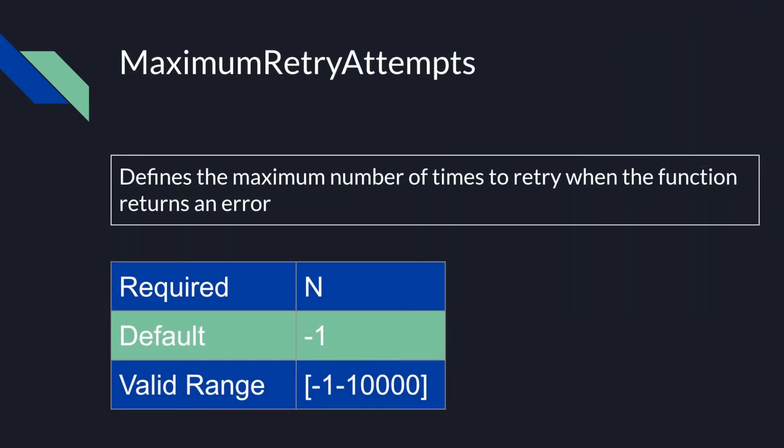Maximum retry attempts: this parameter defines the maximum number of times to retry when the function returns an error. It's not a required parameter. The default is -1, which sets the maximum number of retries to infinite or until the records expire, and the valid range is -1 to 10,000.